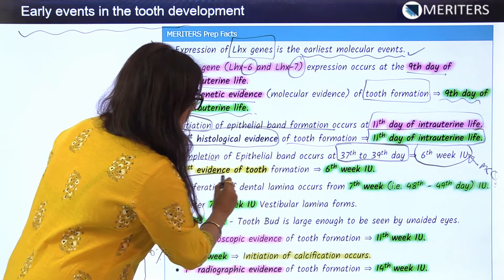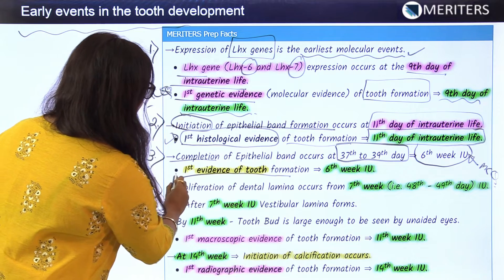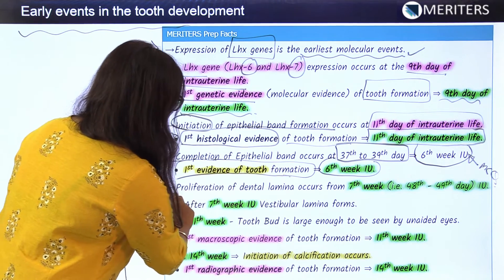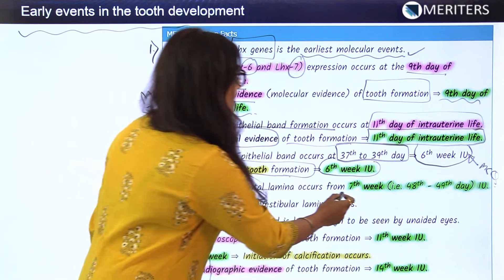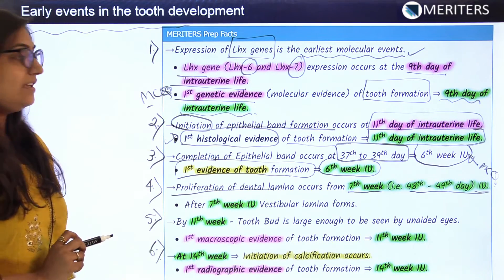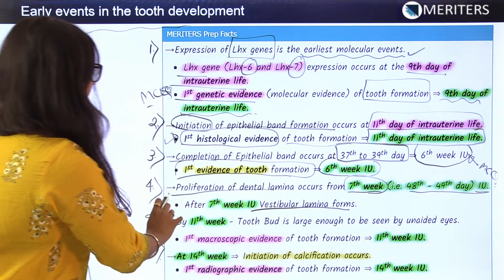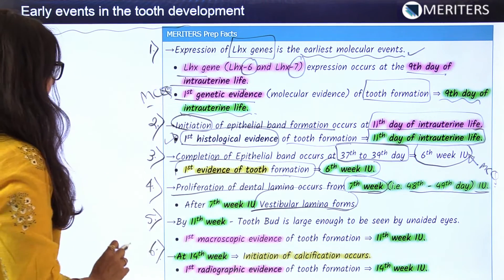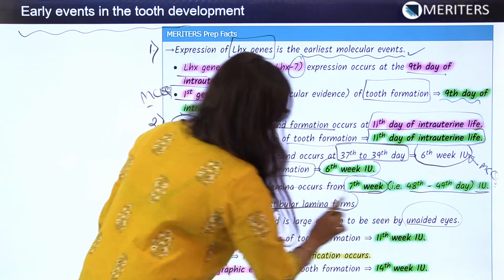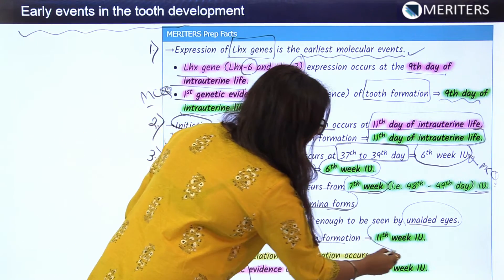The first evidence of tooth formation has been asked in previous papers — it occurs at the 6th week intrauterine. Proliferation of the dental lamina begins at the 7th week, which is the 48th to 49th day intrauterine. After the 7th week, the vestibular lamina forms. By the 11th week, the tooth bud is large enough to be seen with unaided eyes, which represents the first macroscopic evidence of tooth formation.